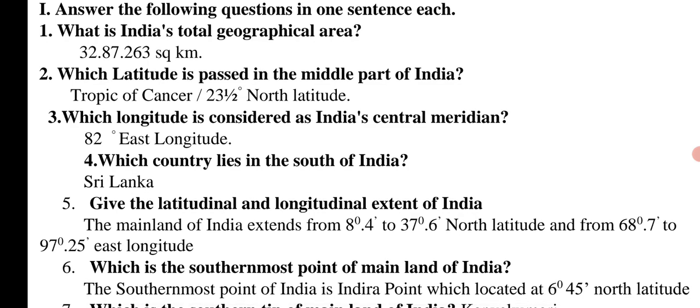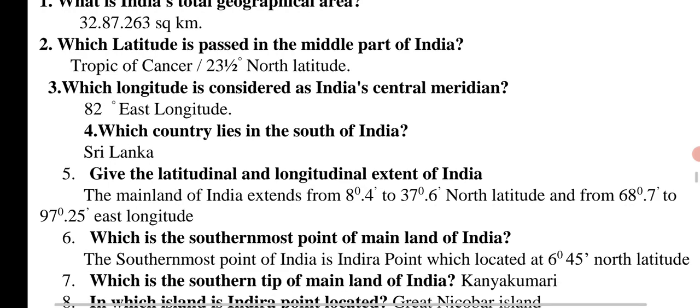Give the latitudinal and longitudinal extent of India. Right answer: The mainland of India extends from 8°4' N to 37°6' N latitude and from 68°7' E to 97°25' E longitude.